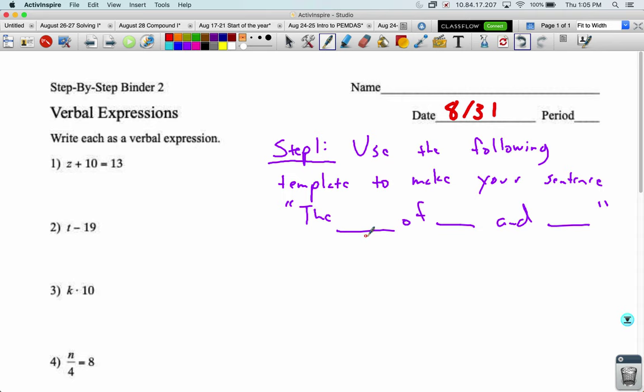Alright, for this first blank, you're going to pick the word either sum, difference, product, or quotient, depending on what operation you see. So if we see addition, we're going to use the word sum. If we see subtraction, we're going to use the word difference.